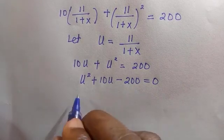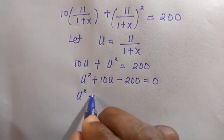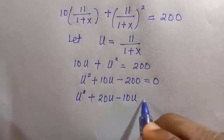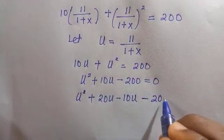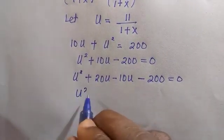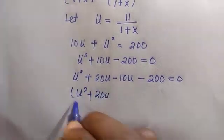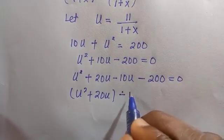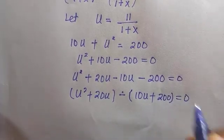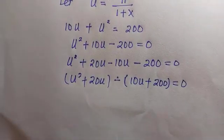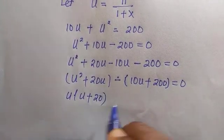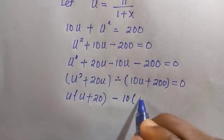This is a quadratic equation, and we can factorize it. So we write U squared plus 20U minus 10U minus 200 equals 0. Combining the first two terms: U squared plus 20U, then factoring the last two: minus 10U minus 200 equals 0. Taking out minus, everything becomes positive in the second group.